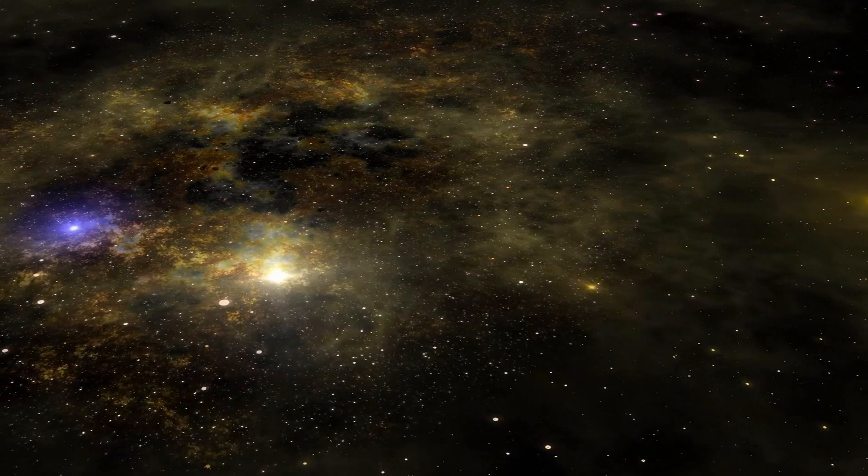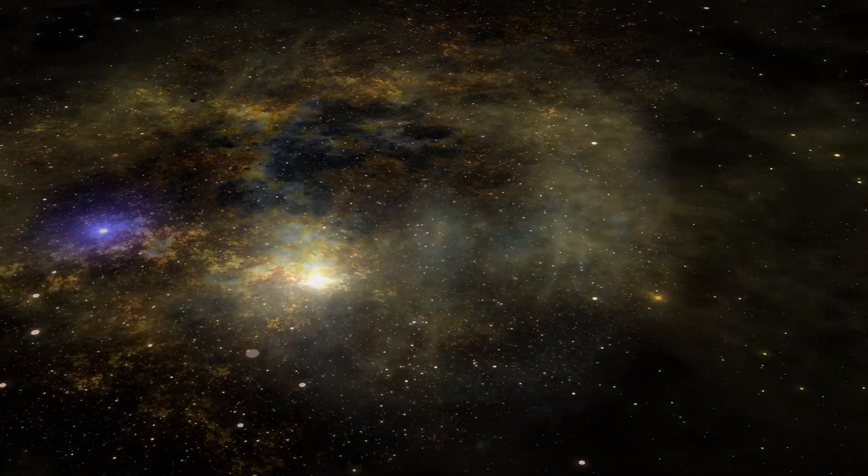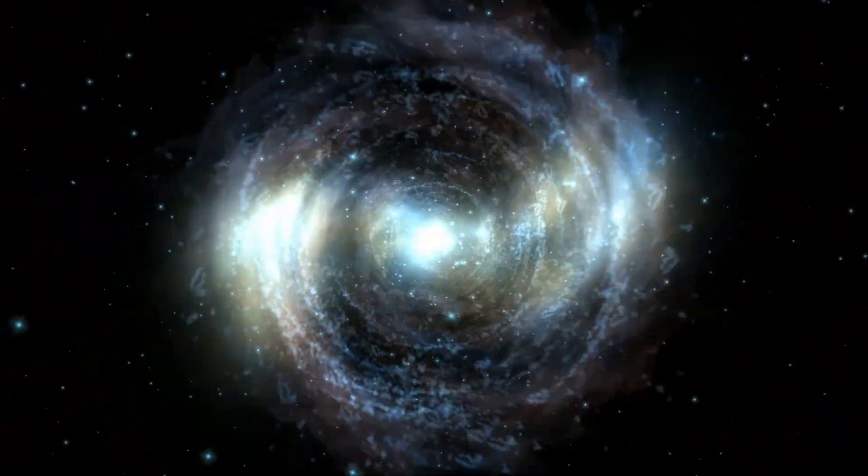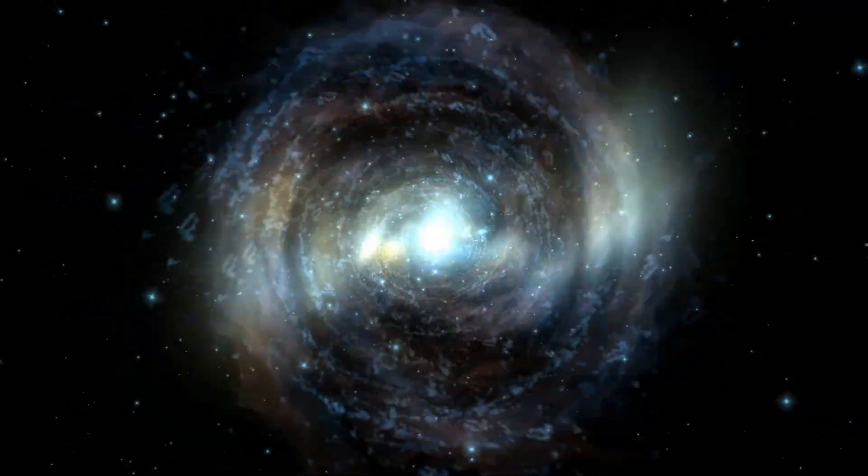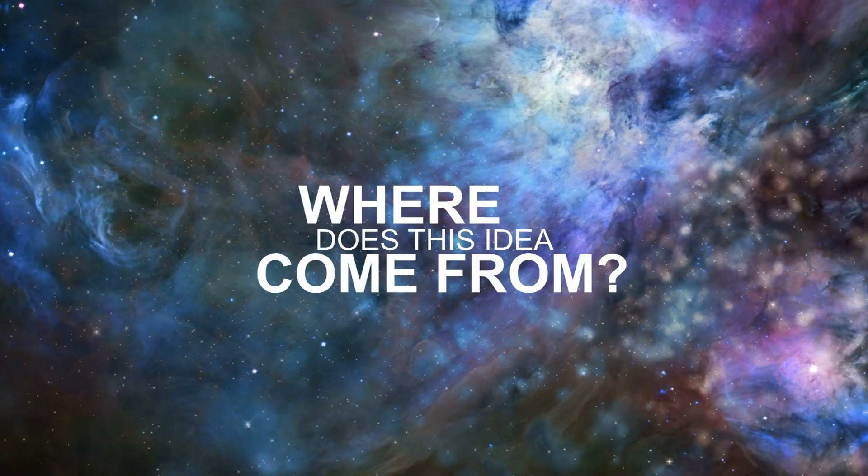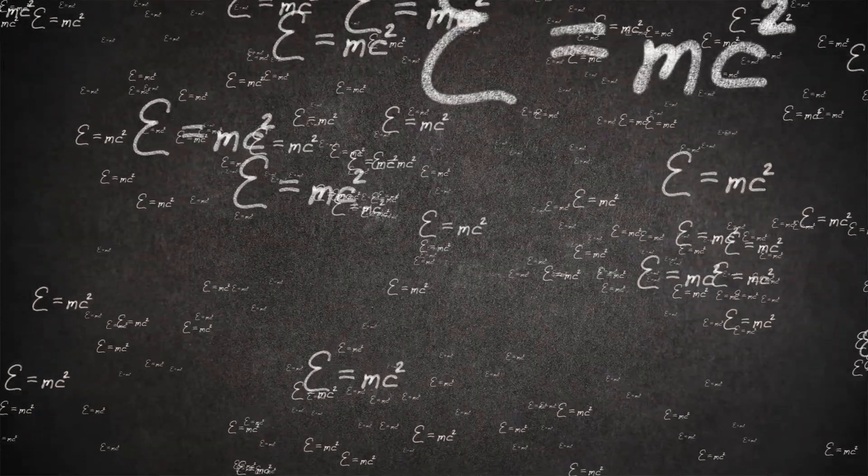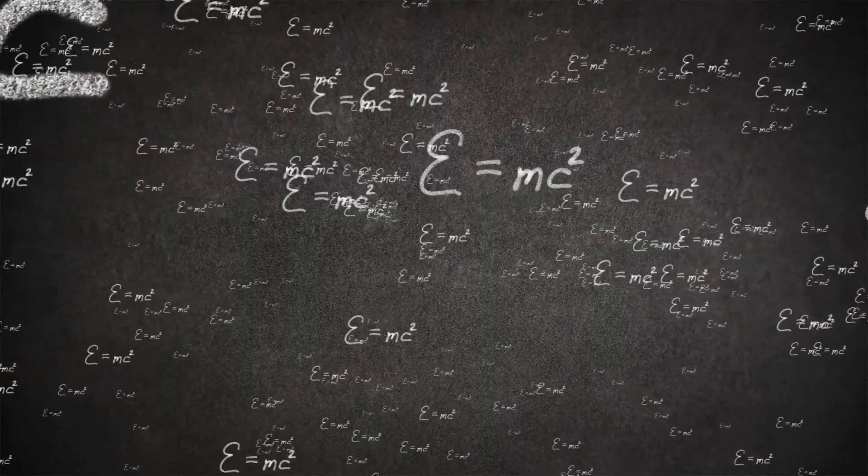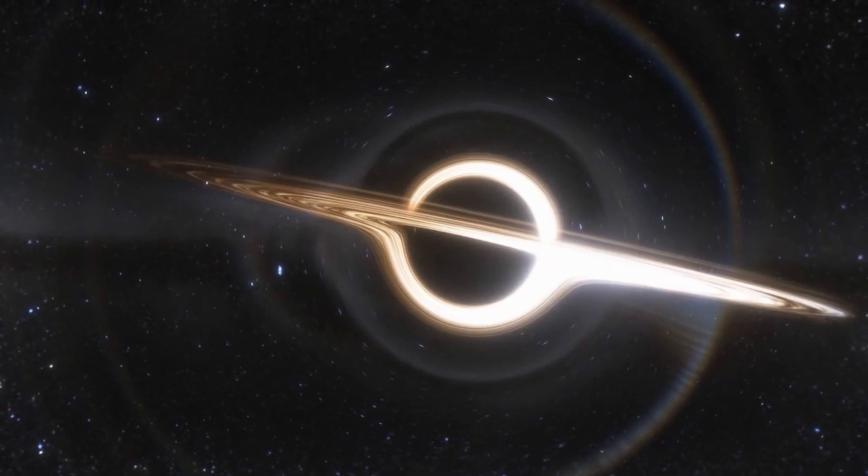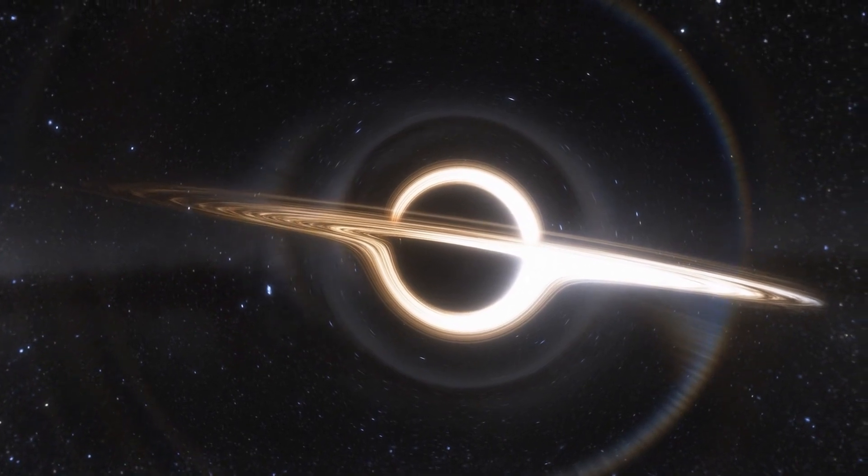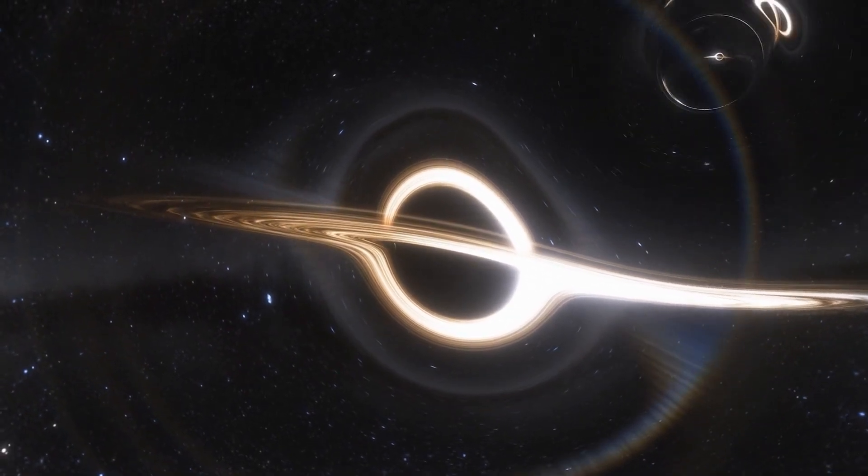They are the time-reversed counterparts of black holes, expelling matter and light outward instead of pulling it in. It's a fascinating concept, isn't it? But you might be wondering, where does this idea come from? Well, it's all about the mathematics of Einstein's theory of general relativity. The origins of white holes lie in the mathematical equations of black holes and the concept of space-time curvature.